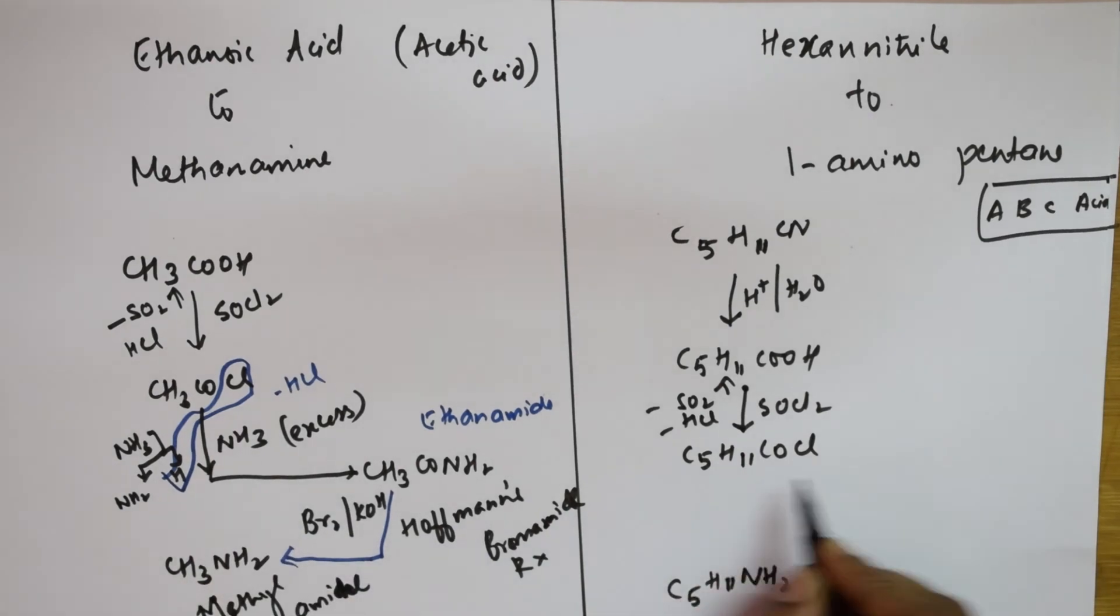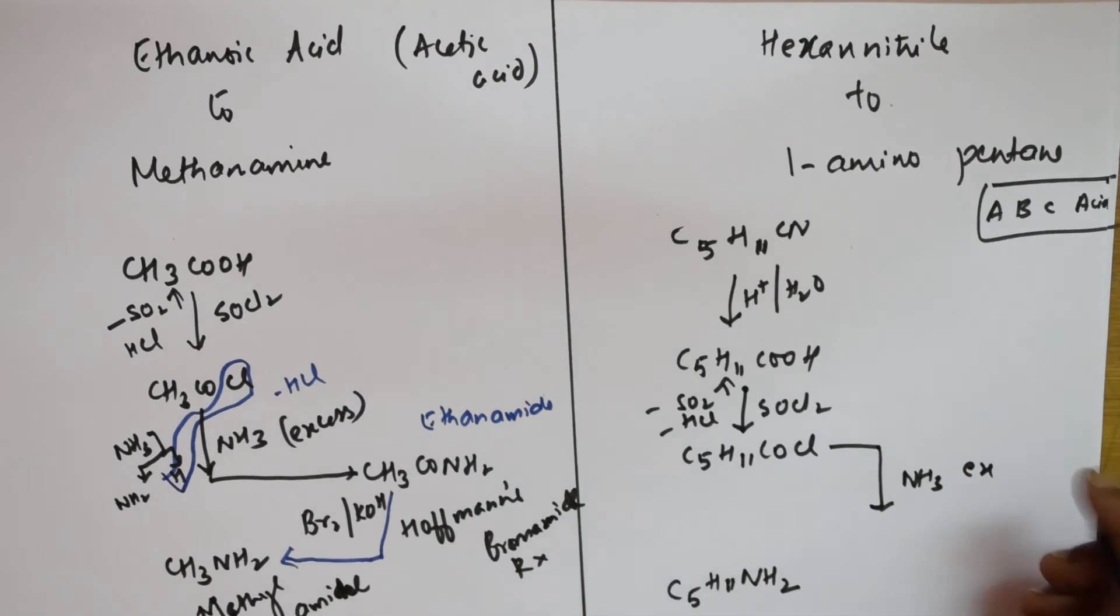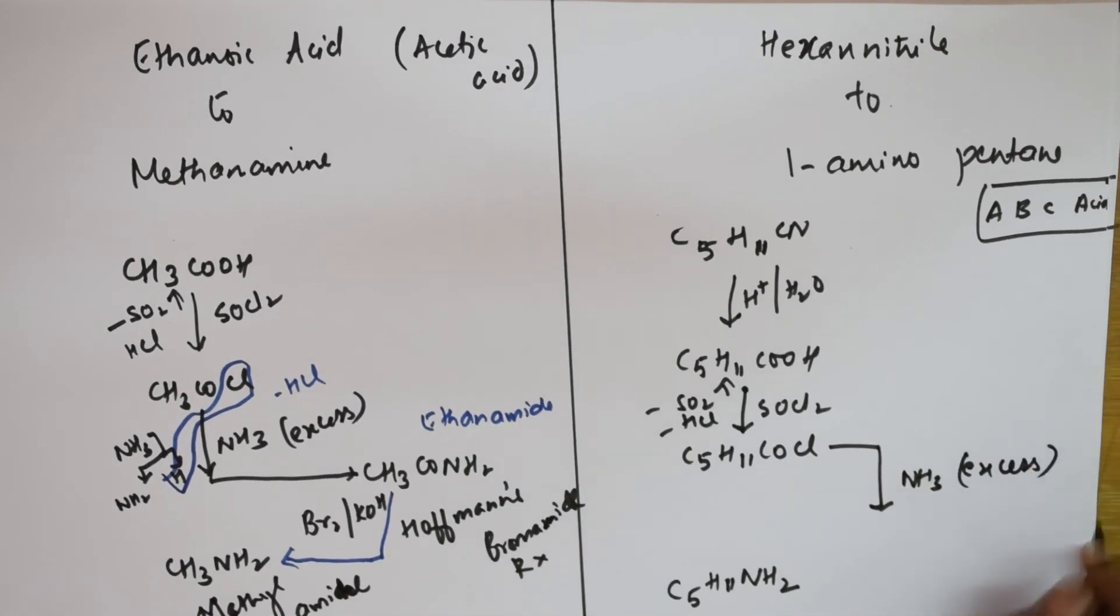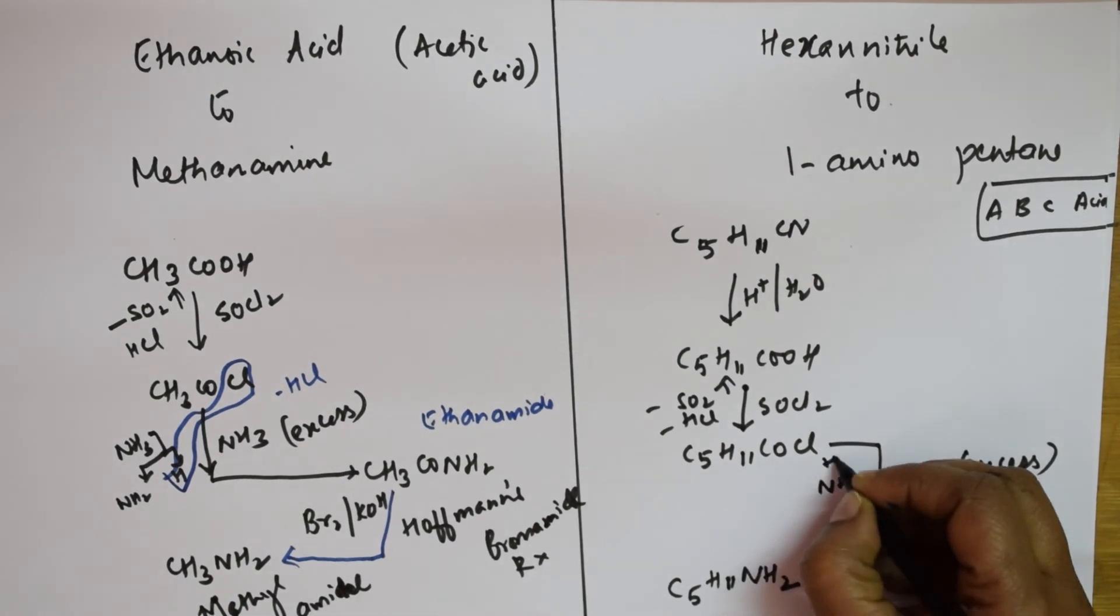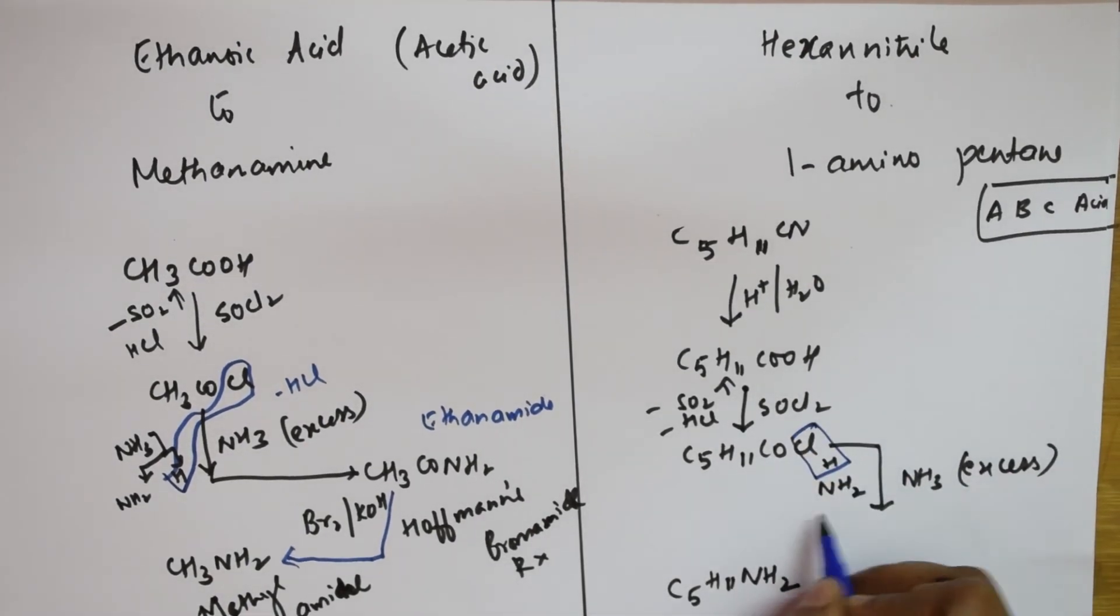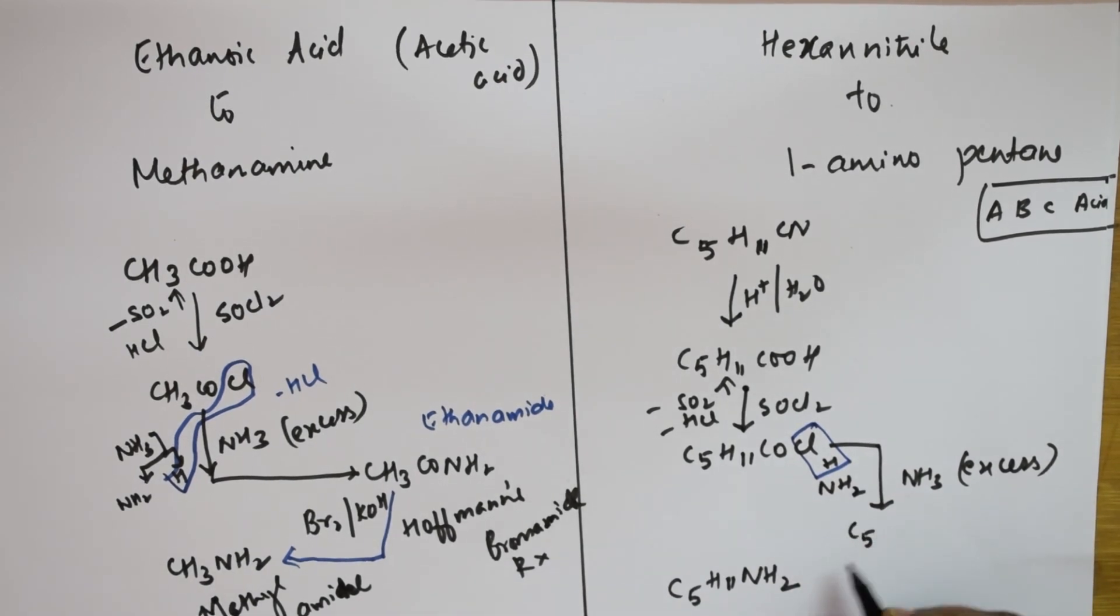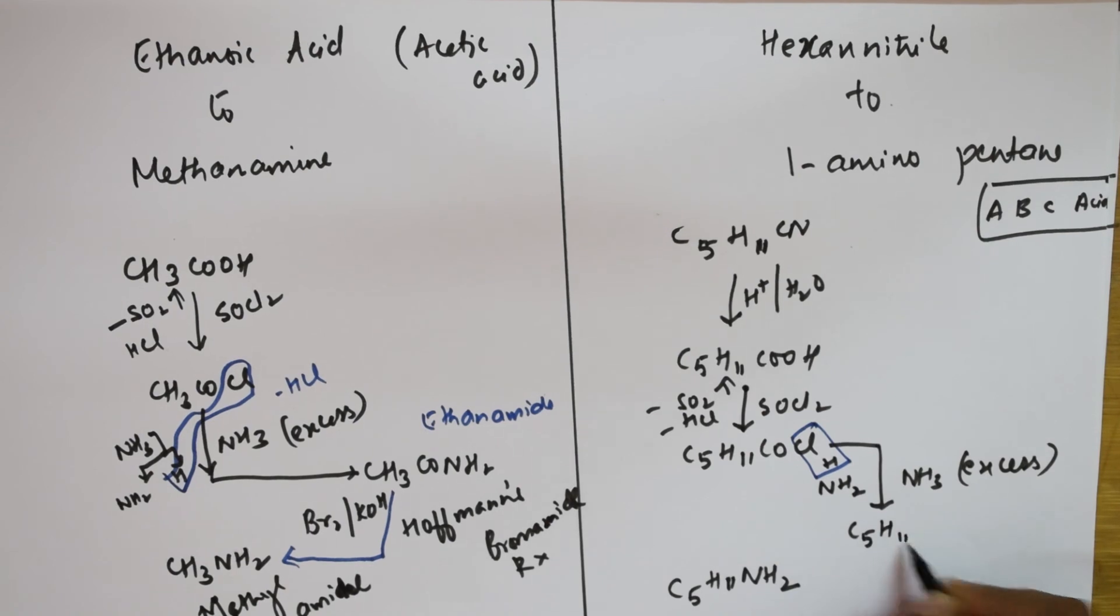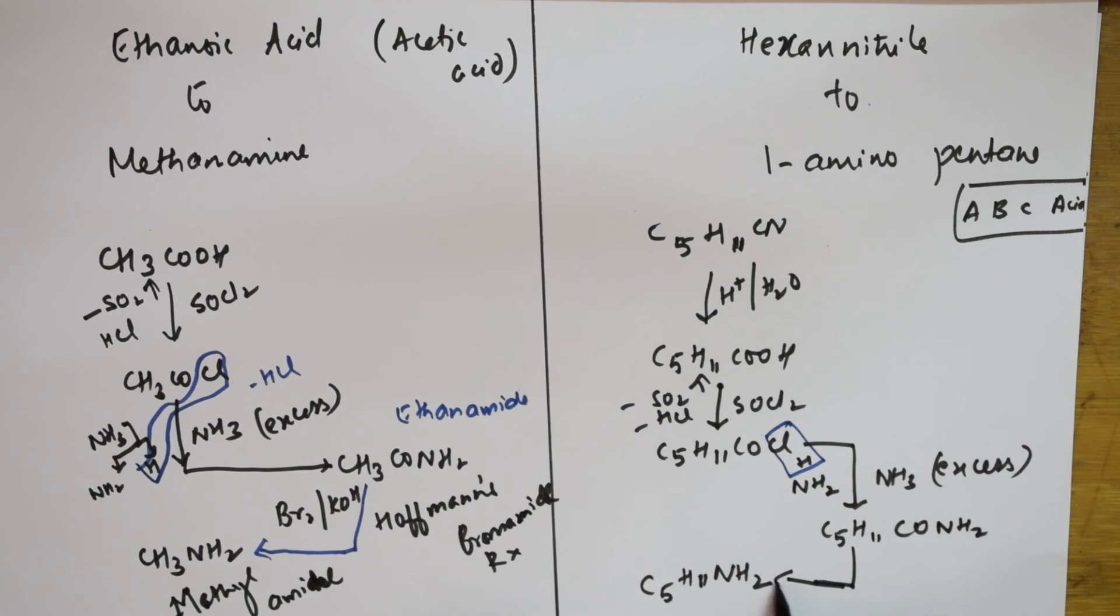Now to this acid chloride, I'm going to introduce ammonia in excess. Same story here. When I introduce ammonia in excess, what will happen? NH2 and H comes out as HCl. So this NH2—let's write what do I get: C5H11CONH2.